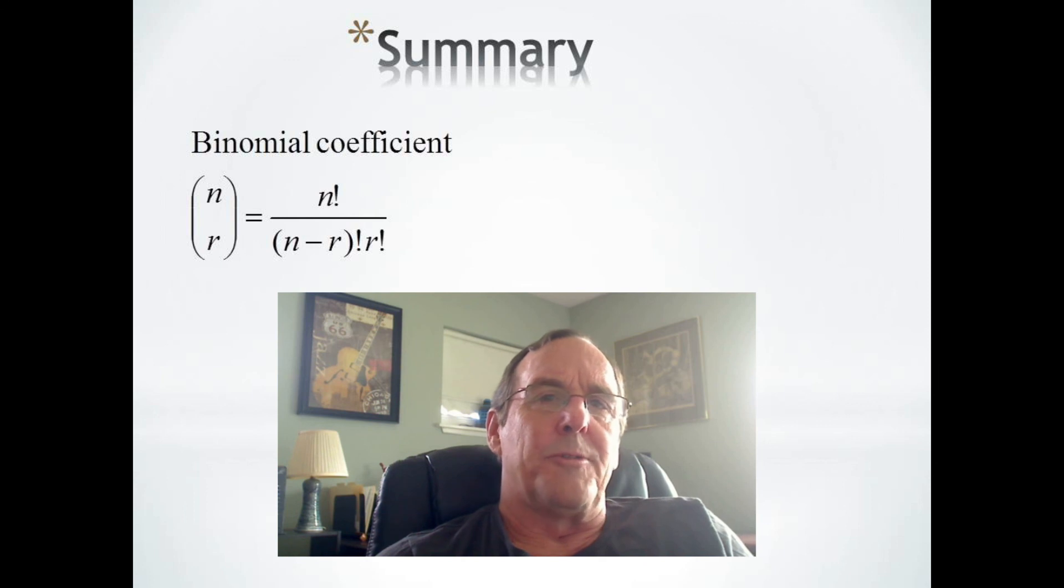In summary, the binomial coefficients for x plus y to the n are the combination formula n choose r, which is n factorial over n minus r factorial r factorial.